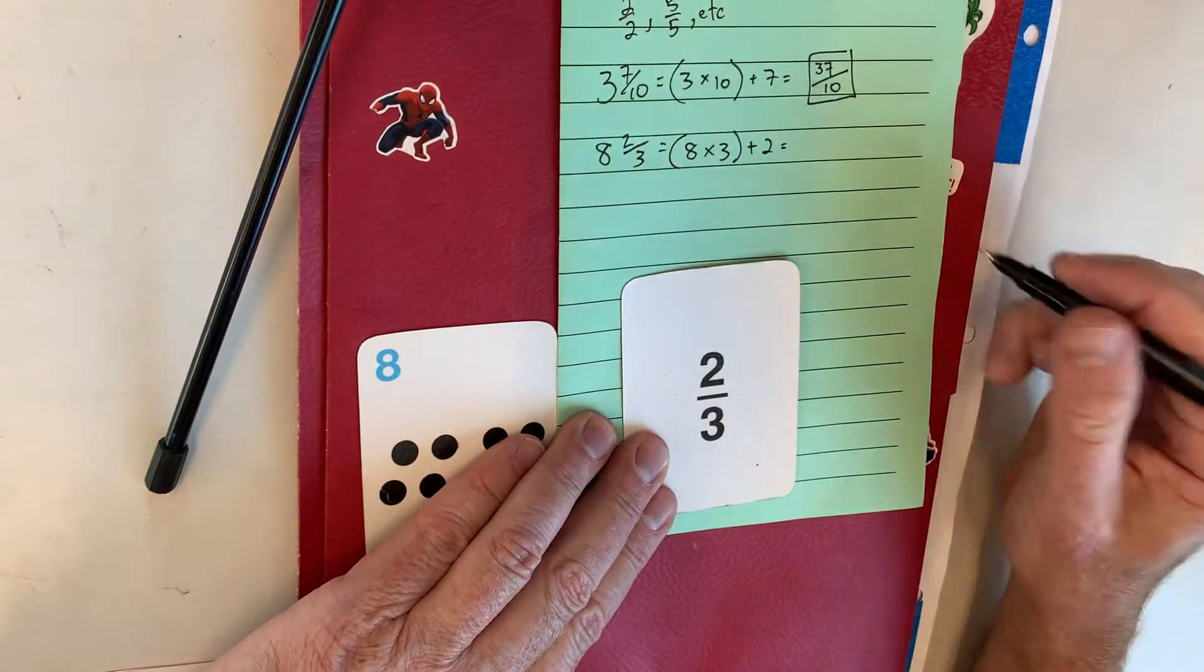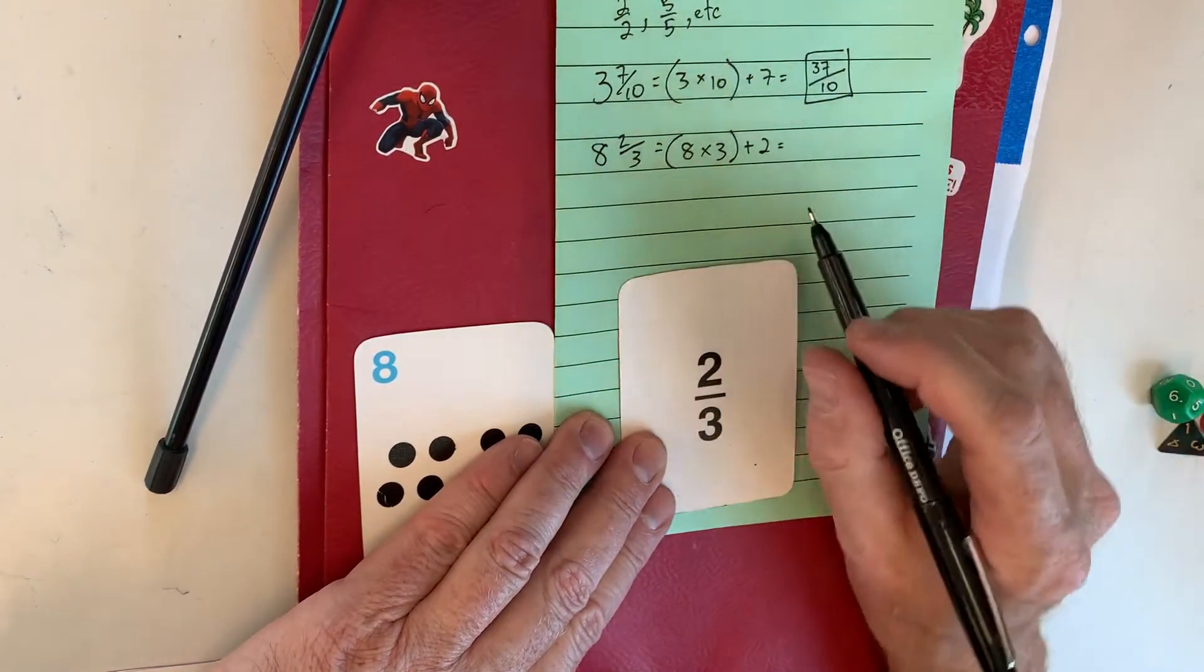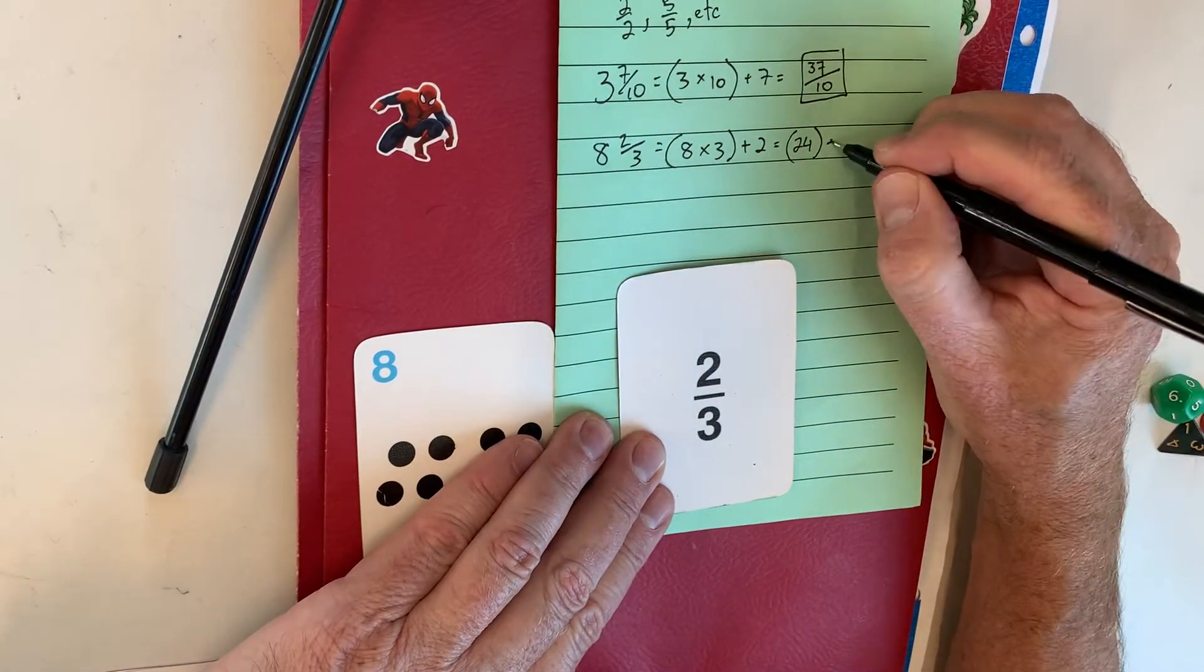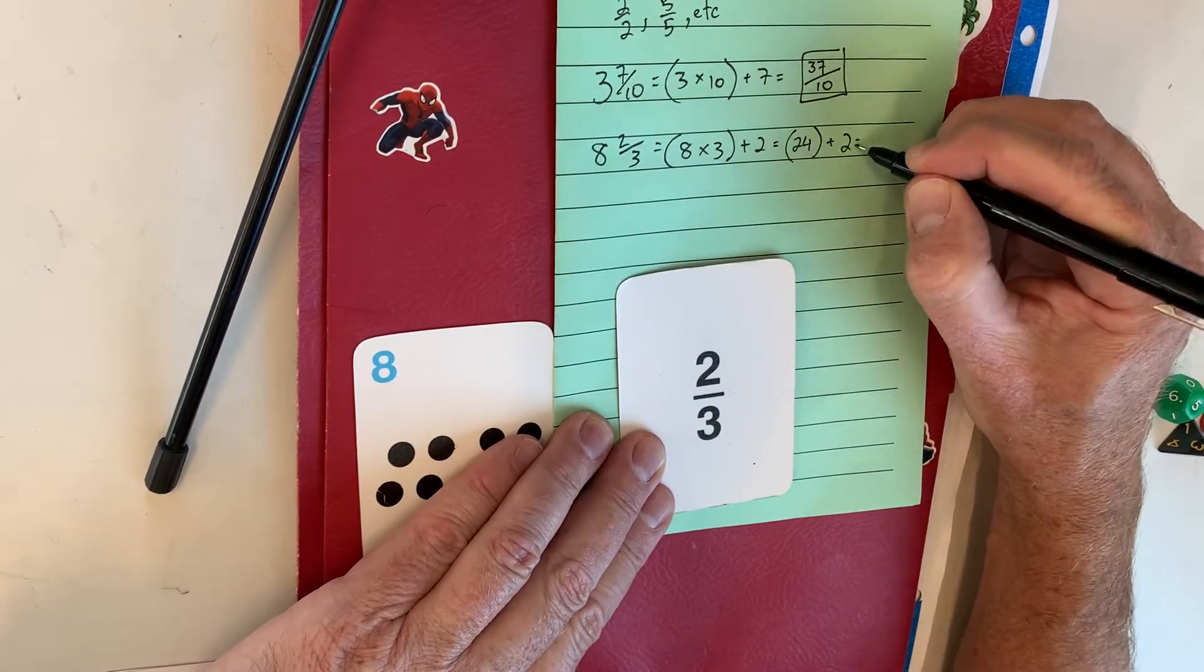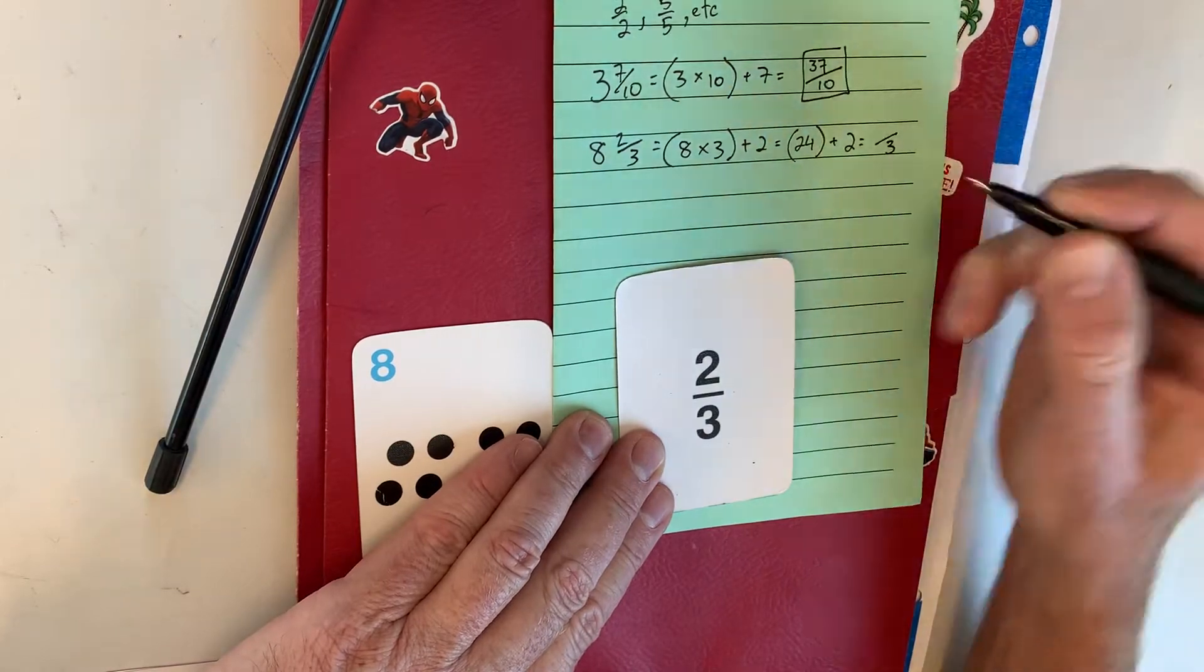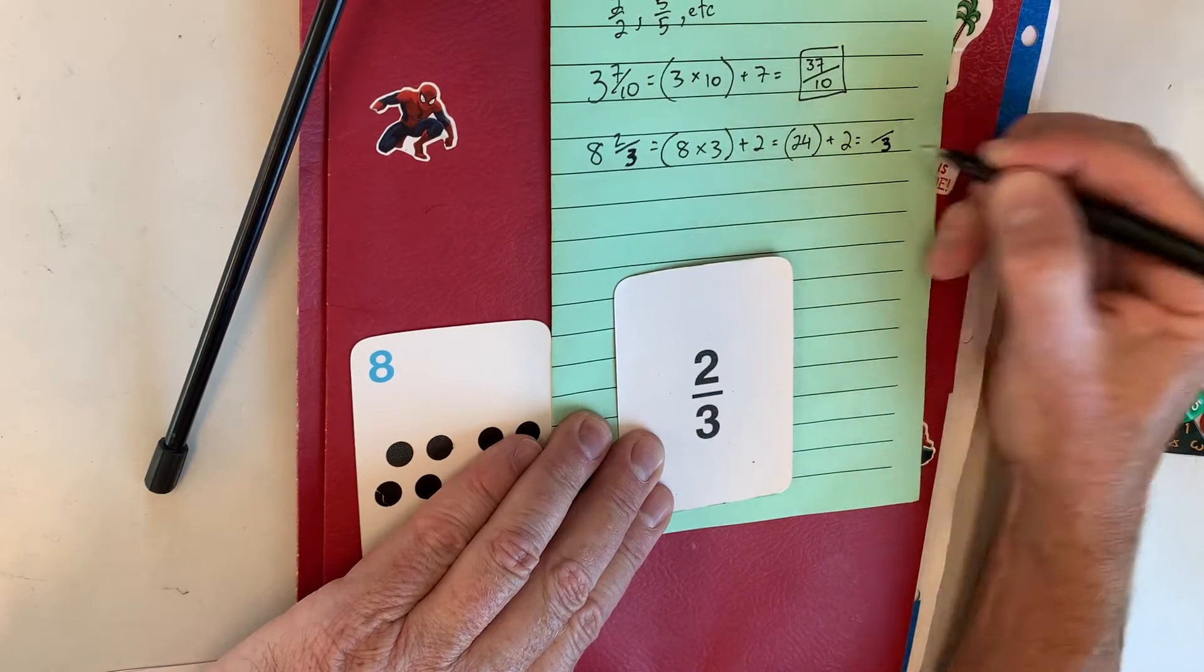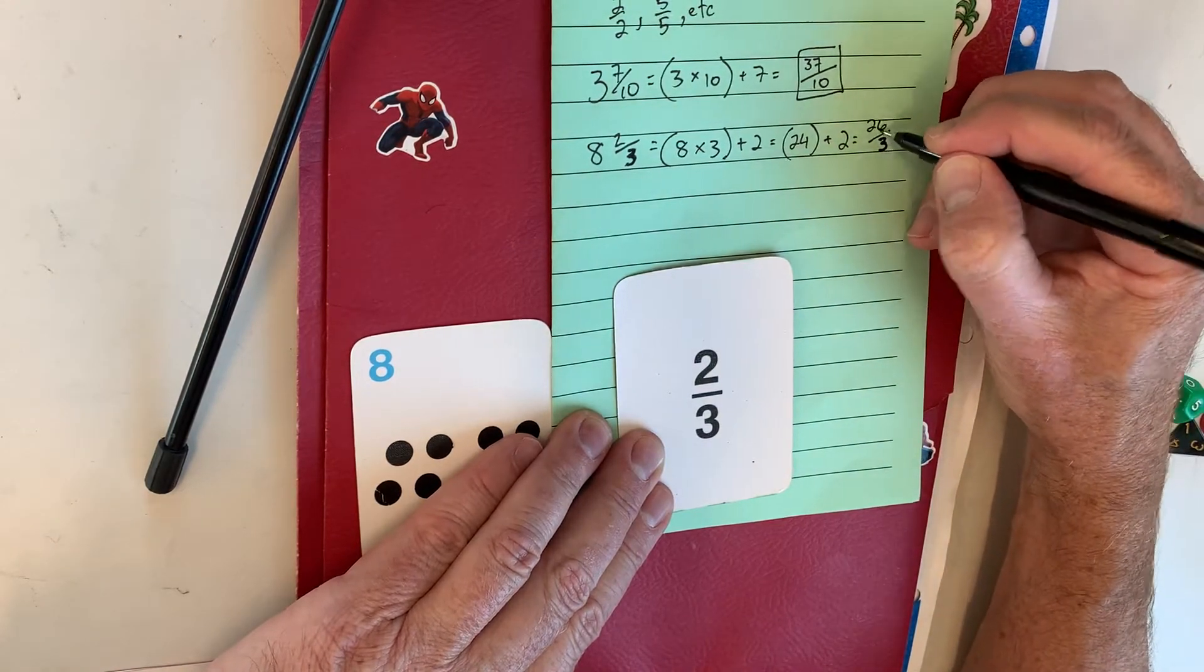And now I'll rewrite it so you can see that missing middle step. Eight times three is twenty-four. Leave it in parentheses if you wish. Increase it by the two of the numerator, and the denominator of three is the denominator here. And this is twenty-six.